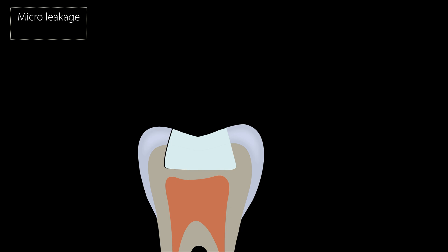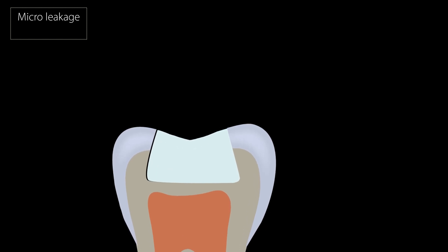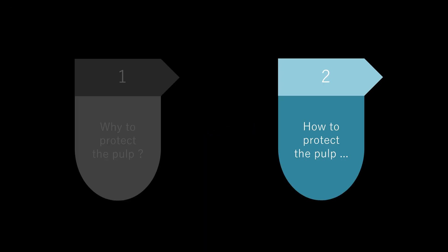Finally, there is micro-leakage, which is very common with composite restorations. When composites cure, polymerization causes the restoration to shrink, creating a gap between the tooth and restoration. This allows ingress of bacteria or fluid, which can lead to secondary caries, sensitivity, marginal discoloration, marginal deterioration, and ultimately pulpal damage. To prevent all these problems, we must protect the dental pulp.